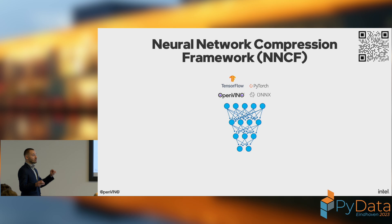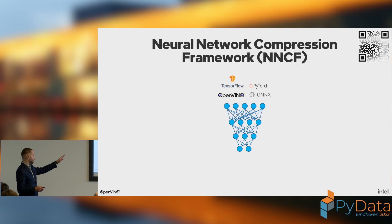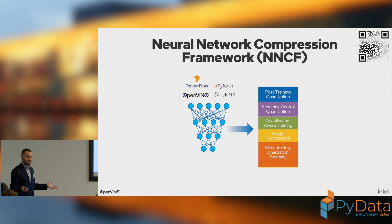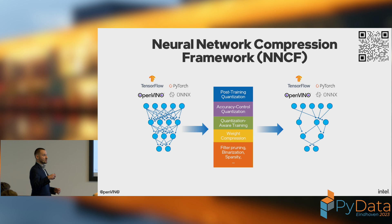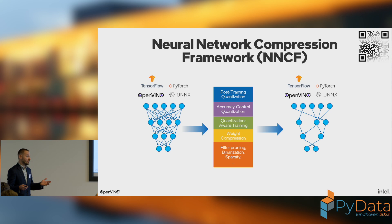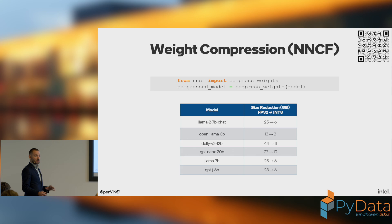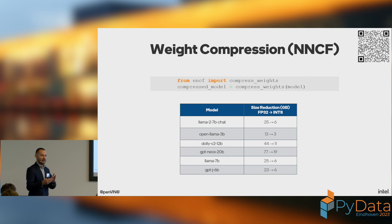Part of OpenVINO is also the Neural Network Compression Framework, NNCF. You take your trained model in TensorFlow, PyTorch, ONNX, or OpenVINO format and apply algorithms: post-training quantization, accuracy control quantization, quantization-aware training, weight compression, filter pruning, binarization, sparsity, and many more. The result is a compressed model. For weight compression in NNCF, it's just two lines of code: an import and a compress_weights call — replacing floating-point weights with integer weights. Install via pip install nncf.